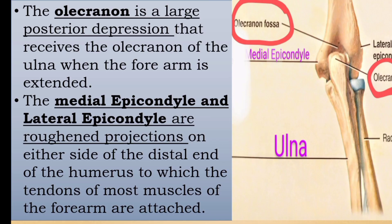The olecranon fossa — the word olecranon meaning elbow — is a large posterior depression that receives the olecranon of the ulna when the forearm is extended, that is, straightened. When the forearm is extended, the olecranon of the ulna fits into the olecranon fossa.